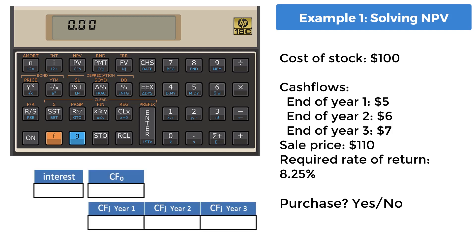Begin with entering the initial cost of the stock, $100. This is entered as a negative number using the change sign key, or CHS, and then placed into the CF0 register using the blue prefix key.